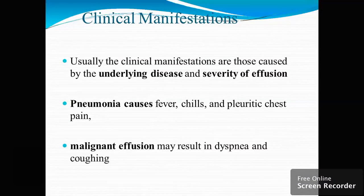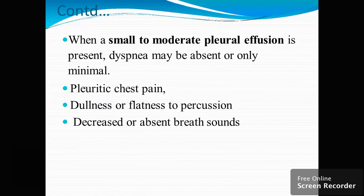Clinical manifestations depend on the underlying disease and severity of the effusion. Pneumonia causes fever, chills, and pleuritic chest pain. Malignant effusion may result in dyspnea and coughing. When a small to moderate pleural effusion is present, dyspnea may be absent or minimal. There will be pleuritic chest pain, dullness or flatness on percussion, and absent or decreased breath sounds.